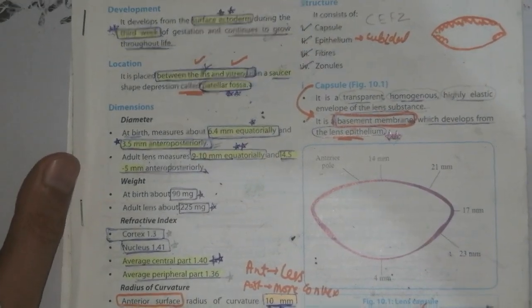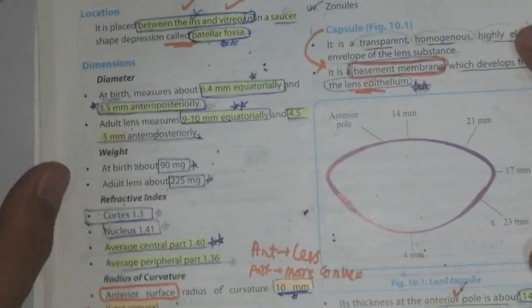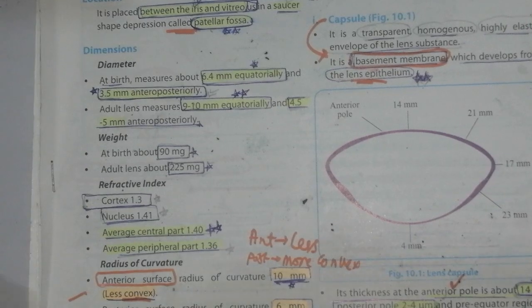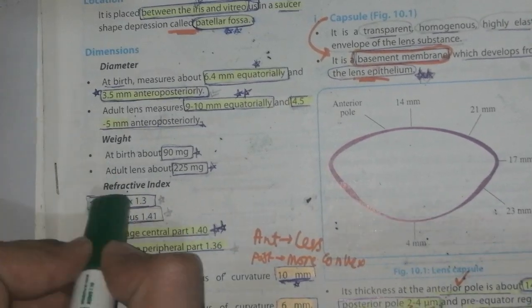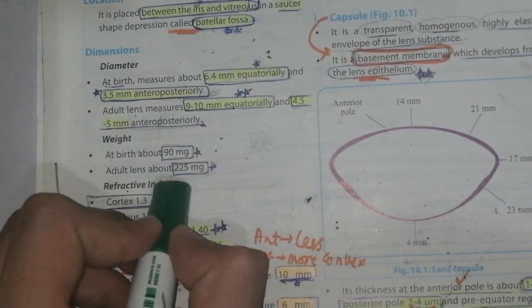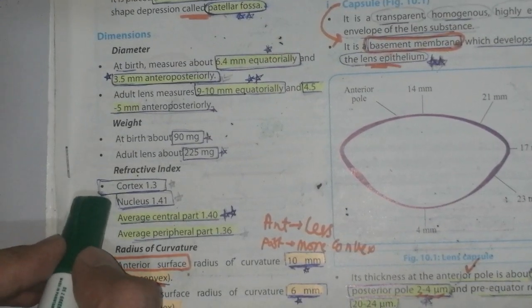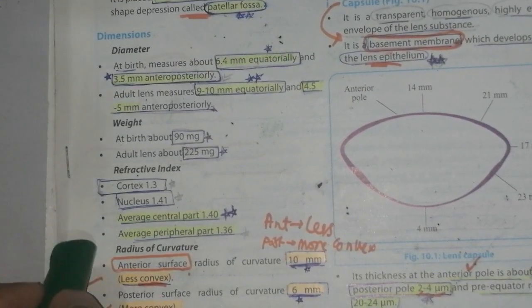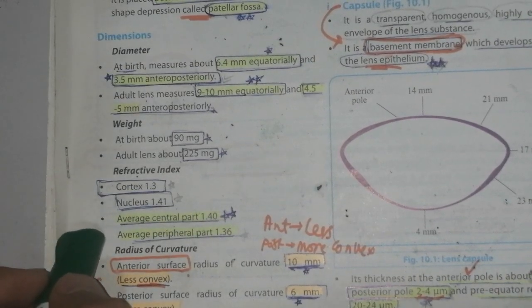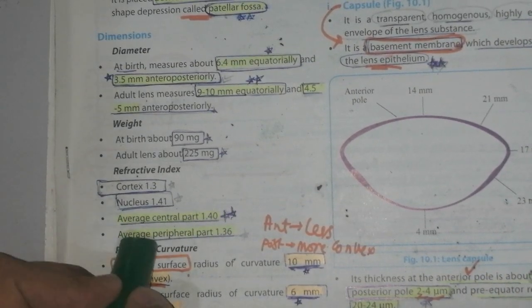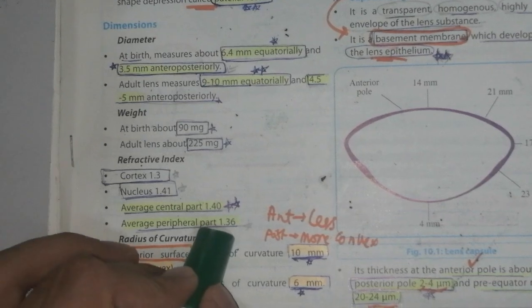Now coming to the weight of the lens. The ideal weight of the lens at birth is 90 milligrams, while in adults it is 250 milligrams. Refractive index: cortex is 1.3 and the nucleus is 1.41. The average central part is 1.40 and the average peripheral part is 1.36.